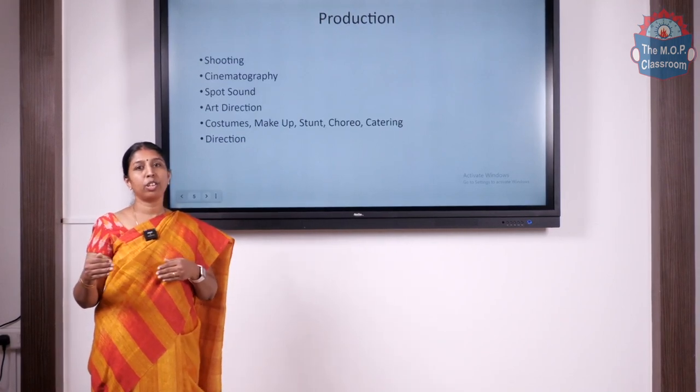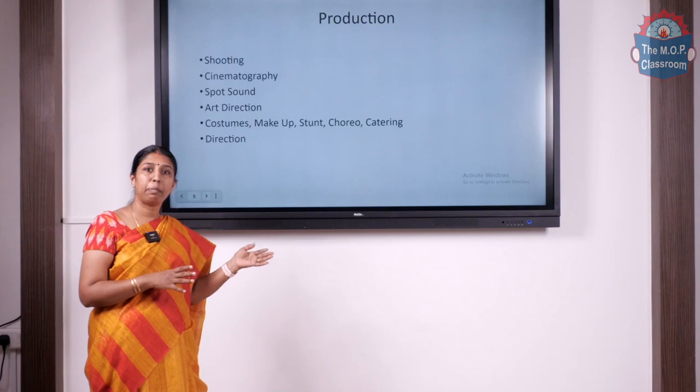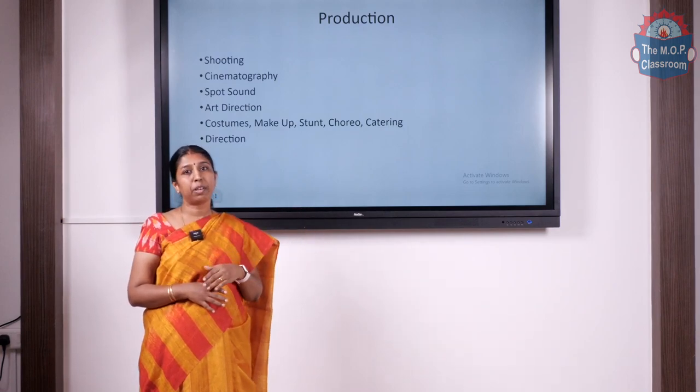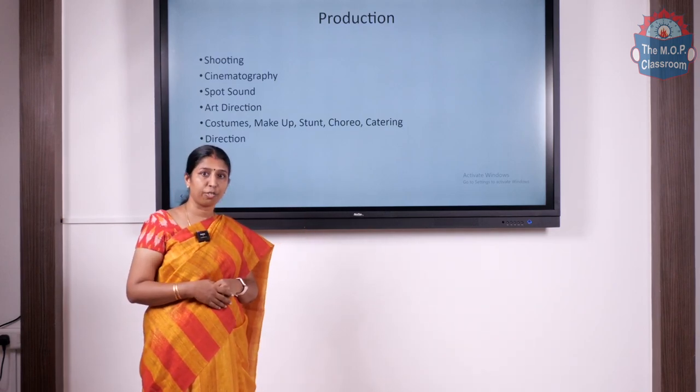Now that we have planned everything properly in the pre-production stage, the shooting process should be comparatively much easier. Then comes the spot sound. In the film making process, sound is recorded separately — unlike television, where visual and sound are recorded together. In the production stage, the sound department works on the soundtrack, recorded at a lower quality, which will be properly synced and replaced with a dubbing track in the post-production process. This is recorded onto a digital audio tape and replaced by a final dubbed audio track in the later stages.